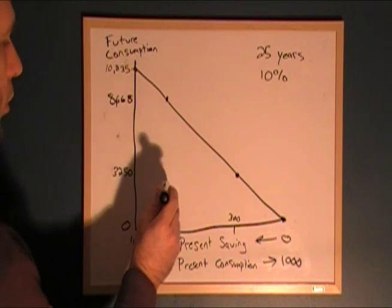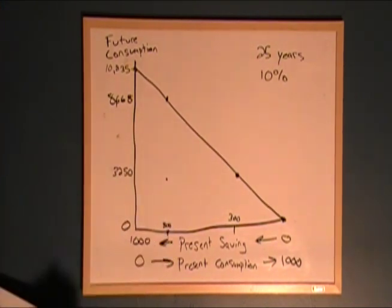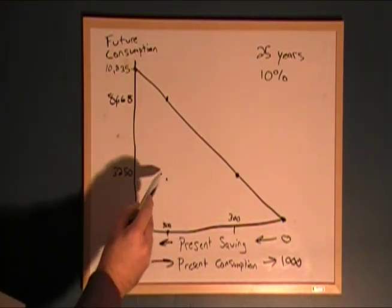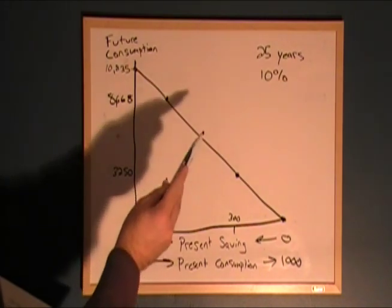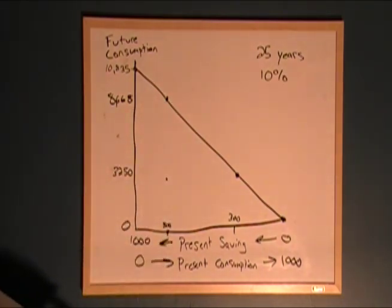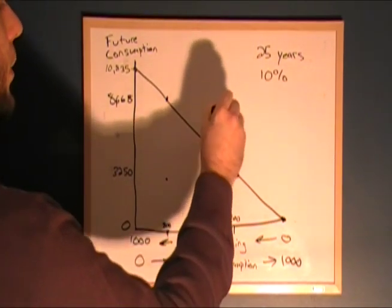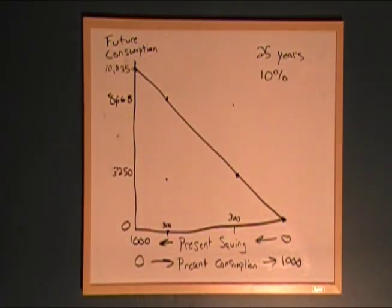Are we going to choose to consume below the budget constraint? No — then we'd be saving our money for less than what we would be able to, so we don't want to do that. Are we going to be able to consume at a point out here where we're consuming $700 worth of goods now and $8,668 in the future? That would be great, but we're not being offered that high of an interest rate, so we can't do that.